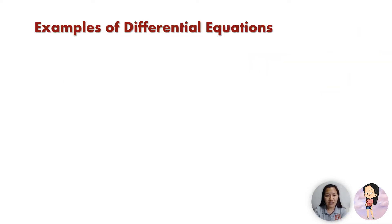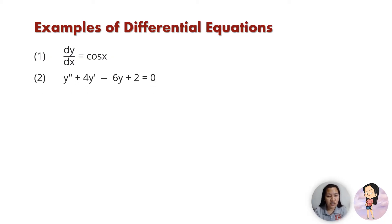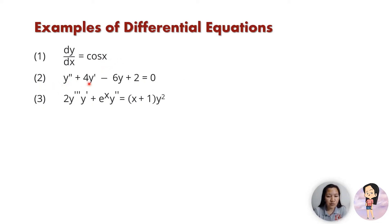In dealing with these different types of equations we use several notations for the derivative. Here are examples of differential equations using different notations. The first one: dy/dx = cos(x). Number 2: y'' + 4y' + 6y + 2 = 0. Number 3: 2y'''y' + e^x · y'' = (x+1)y².